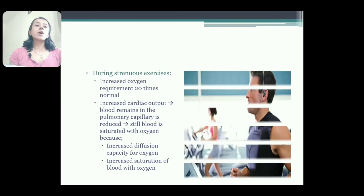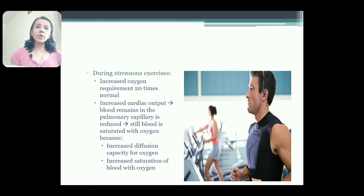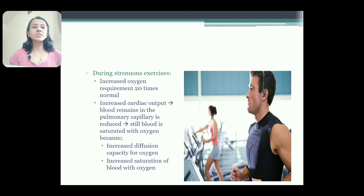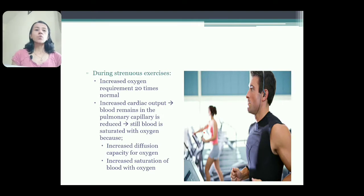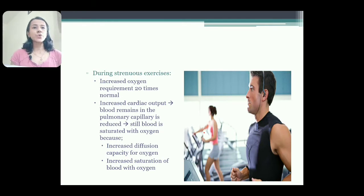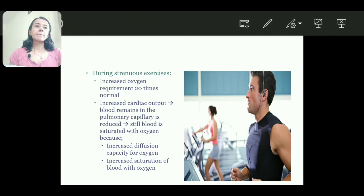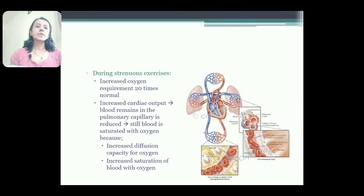During strenuous exercise, oxygen requirement increases about 20 times than normal. Cardiac output increases, therefore blood remains for a short period of time in the pulmonary circuit. Still, the blood is saturated with oxygen. The reasons for saturation: diffusion capacity for oxygen increases and saturation of blood with oxygen also increases, because of opening of more and more blood vessels.